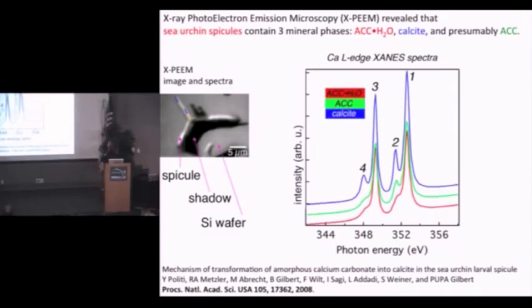So using PEEM, we discovered back in this 2008 paper that there are indeed three mineral phases. The first one is amorphous calcium carbonate that I abbreviate ACC. Amorphous calcium carbonate is ACC. The first phase is hydrated. The second phase is presumably anhydrous ACC. And the third phase is calcite. Red, green, blue, RGB is the easy way to remember three colors. And this is the sequence of phases.